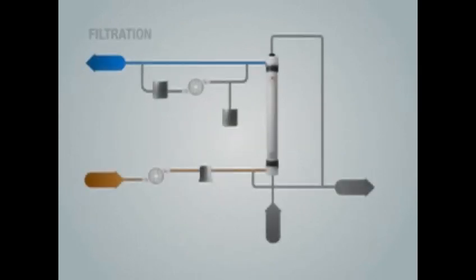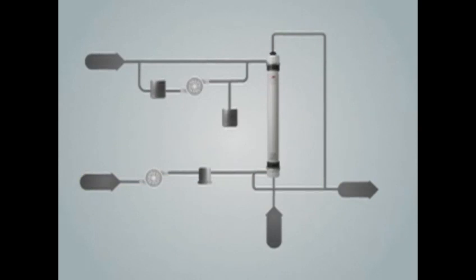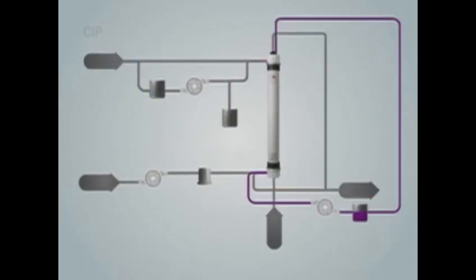Operation of a Dow Ultra-Filtration Module consists of several steps: filtration, physical cleaning including air scouring, backwash, and forward flush, and chemical cleaning, including chemically enhanced backwash and clean in place.